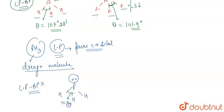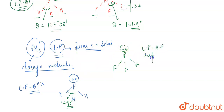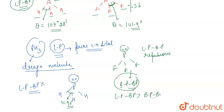The bond angle in PH3 is nearly 90 degrees. In PF3, however, this is not a Drago molecule — it does show hybridization and its lone pair is not in the pure s orbital. Therefore, there are lone pair–bond pair repulsions as well as bond pair–bond pair repulsions present. Since lone pair–bond pair repulsions are stronger, the bond angle observed in PF3 is nearly 97 degrees, which is certainly more than in PH3.